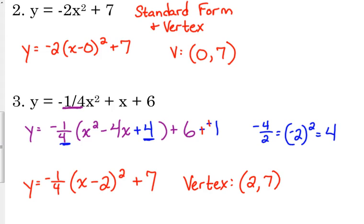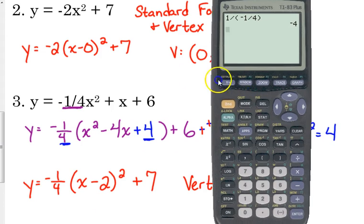Because we changed the sign of the x. Right now it's negative 2 inside the parentheses, so it's positive 2 to our vertex.